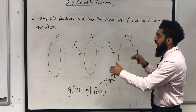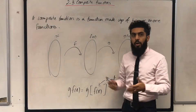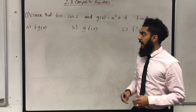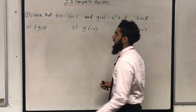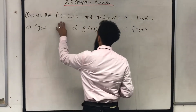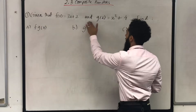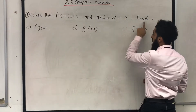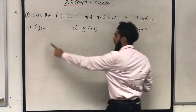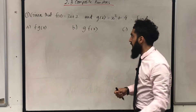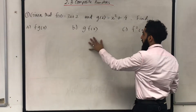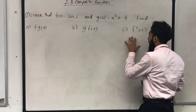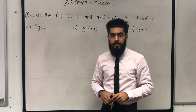This is the general idea of a composite function. Let's have a look at example number one. Given that f(x) = 3x + 2 and g(x) = x² + 4, find part a: f(g(x)), part b: g(f(x)), and part c: f²(x).